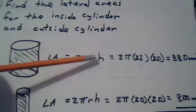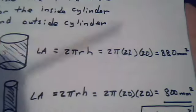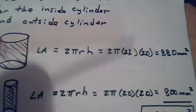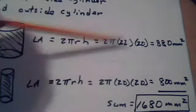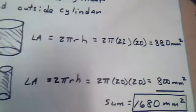So supply the r and the h for each of these cylinders. This is the bigger cylinder, has a radius of 22 millimeters, and the smaller one has a radius of 20 millimeters. Run through these formulas, and you get these two lateral areas.